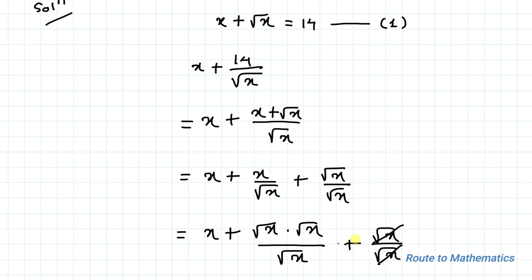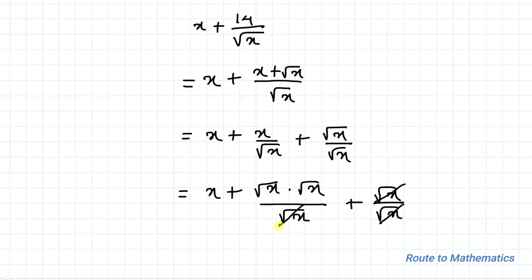This root x, root x get canceled out, likewise this root x and root x get canceled out. So we have x plus root x plus 1. From equation 1, we have x plus root x equals 14.